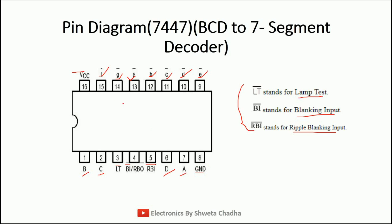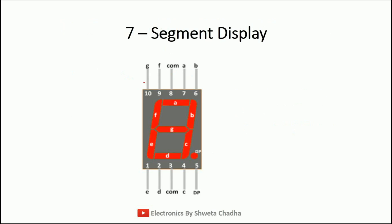Then we have ground and VCC. The output pins A, B, C, D, E, F, and G are going to be connected with the 7 segment output. So this is the connection of 7447, which is our decoder.